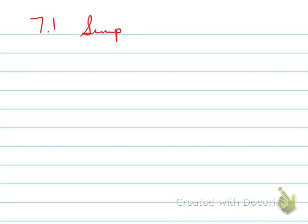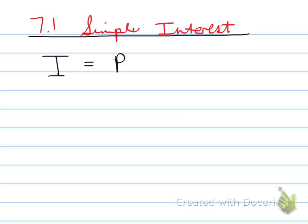Okay folks, we're looking at 7.1, simple interest. In this particular unit, we're going to be looking at formulas that we need to memorize.